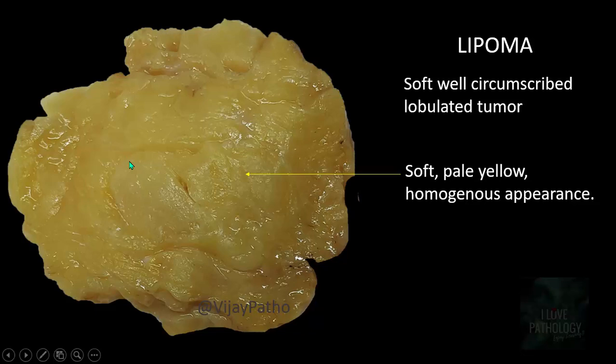On cut surface, the lipoma has a soft, pale, yellow, homogeneous appearance. It is a soft, well-circumscribed, lobulated tumor with a homogeneous appearance.